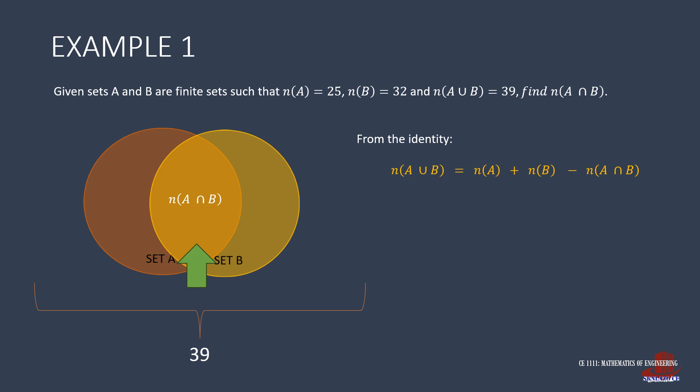Check out the given. We have the number of elements in set A as 25, in set B is 32, and the total number of elements in both sets is 39. Simply plug these values in the identity, so we get 39 equals 25 plus 32 less n(A ∩ B). Transpose the other elements and isolate n(A ∩ B) as 25 plus 32 minus 39 to give 18.